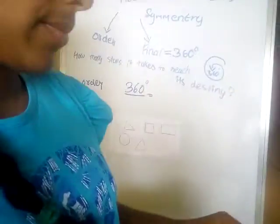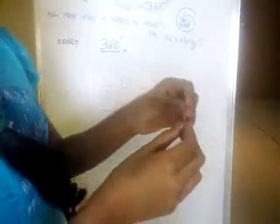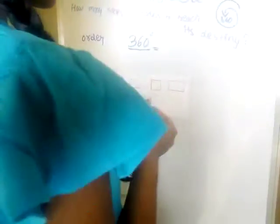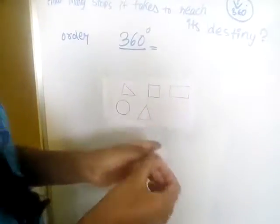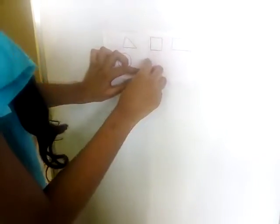See this is a triangle. I have marked it at a point. So how many turns it would take? Let's see.